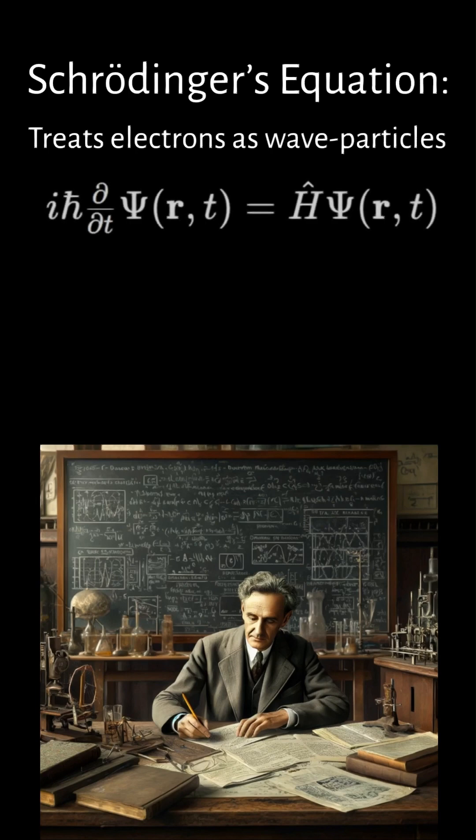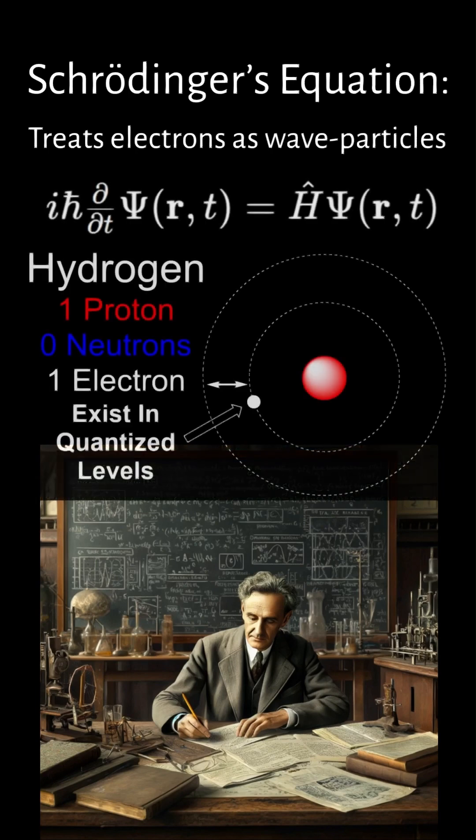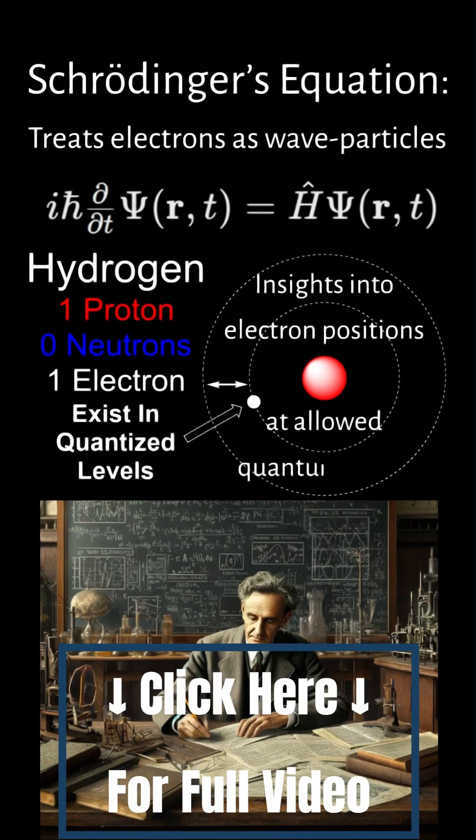While Schrödinger's equation is mathematically complex, its application to the hydrogen atom revealed profound insights into electron positions at allowed quantum levels.